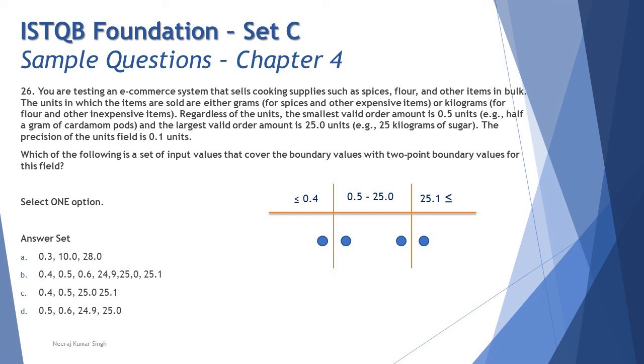The values mentioned in the table are your hint to the right answer. I won't discuss any other options. The straightforward right answer here is C: 0.4, 0.5, 25.0, and 25.1 is the right set of boundary values as per two-point analysis.